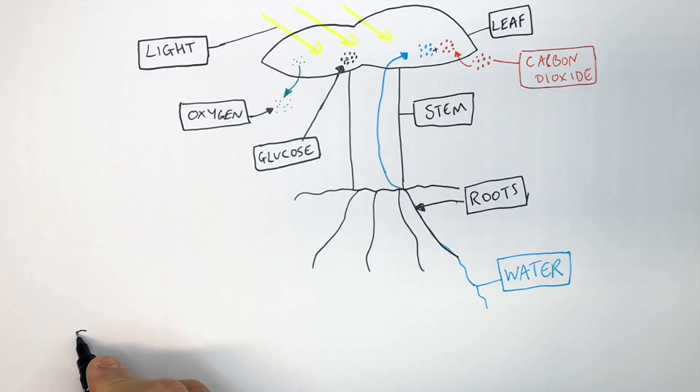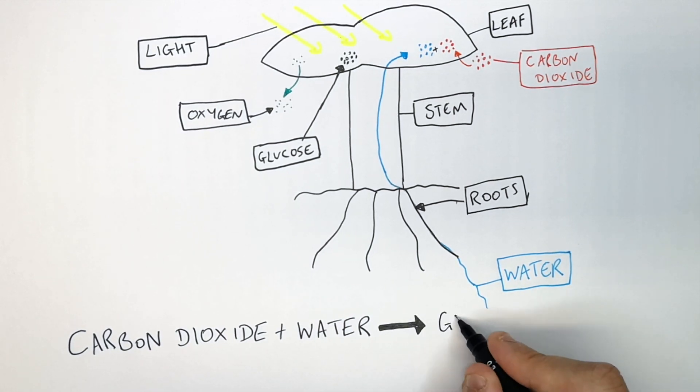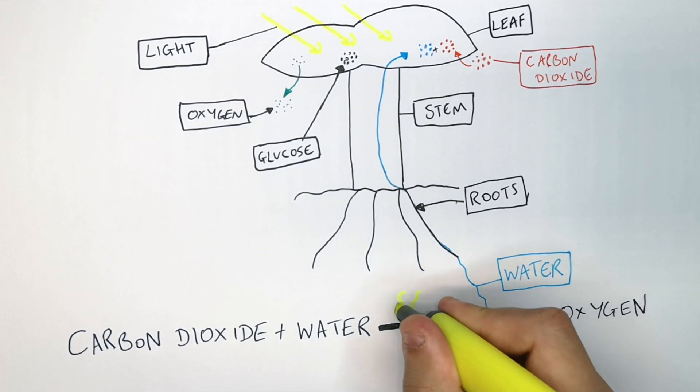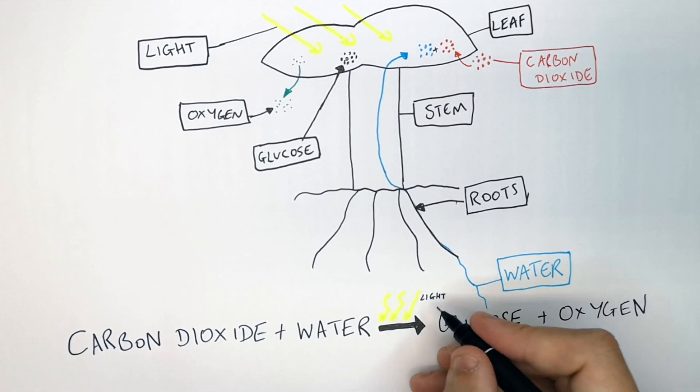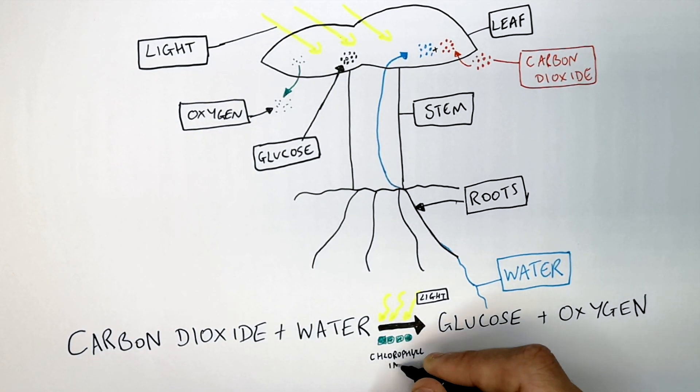So the equation for photosynthesis is carbon dioxide plus water forms glucose and oxygen. It is light that provides the energy for this reaction, and the light energy takes place in the chlorophyll of the chloroplasts inside the plant cells.